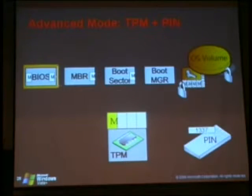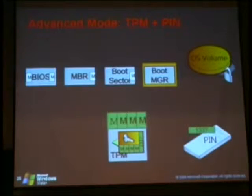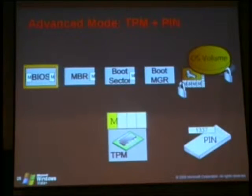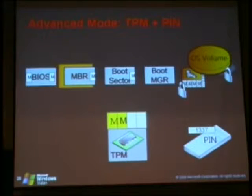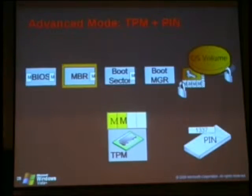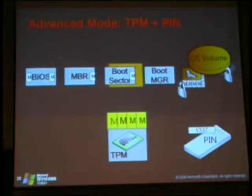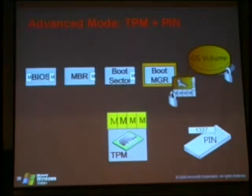Let's look at TPM plus PIN, a little bit slower. The same thing happens as in the previous environment — everything is measured in the chain. Each link measures the next link, puts the measurement into the PCRs, and passes control to it. But in the TPM plus PIN mode, there's one additional step that happens.